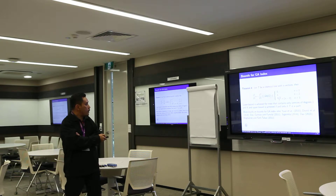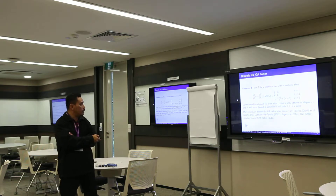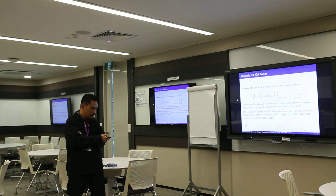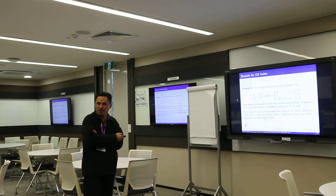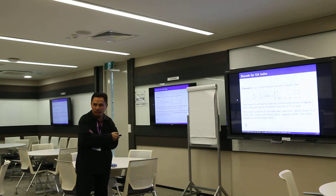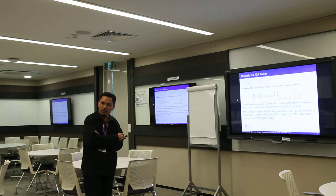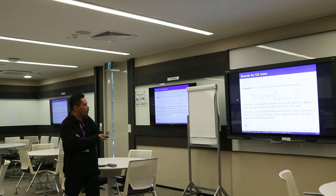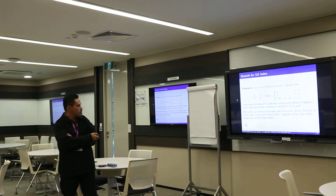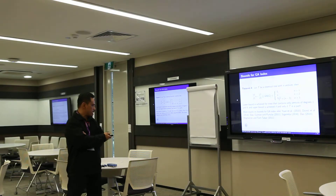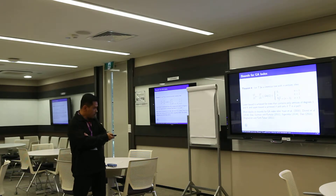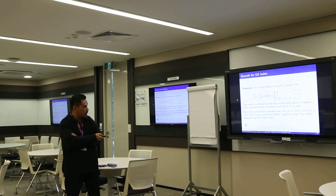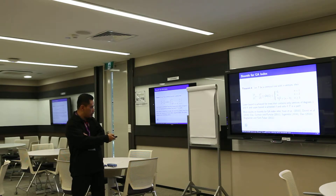They also consider chemical trees — trees with maximum degree at most four. For chemical trees, the lower bound is achieved for trees containing only vertices of degree one and four, and the upper bound is achieved if and only if T is a path. There are many more results on the GA index in the literature, all related to bounds for the GA index.